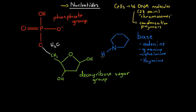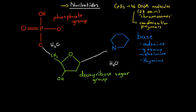Similarly, over here we have a hydrogen and a hydroxyl group that get split off to produce a water molecule, giving us a direct bond between this carbon in the deoxyribose sugar ring and the nitrogen in the base. This corner represents a carbon, so we get a direct bond between that carbon and that nitrogen. This one combined molecule is what we call a nucleotide.